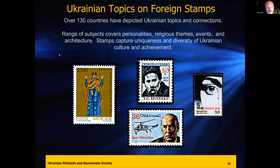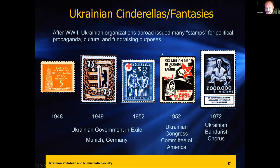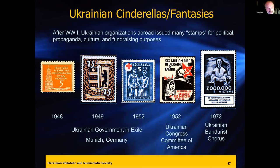There's a whole other area of collecting getting more visibility — Ukrainian cinderellas and fantasy stamps. They're not postage stamps, though some were placed on covers alongside legitimate stamps. These have been produced since the late 1940s to the 1970s on various topics. Nobody really cared about this material at the beginning — they were worth practically pennies. Now all of a sudden a lot of people in Ukraine are buying as many as they can find, and prices are growing phenomenally. There's so much interest now in Ukrainian philately.